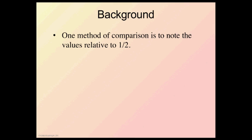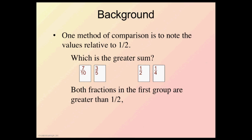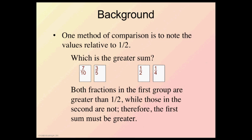A little bit of background information with this. One method of comparison between the two cards is to note the values relative to one-half. So which is the greater sum? The two cards on the left or the two cards on the right? Well, both fractions in the left group are greater than one-half. Seven-tenths is more than one-half, and three-fifths is more than one-half. And the fractions in the second group are one-half or less. Therefore, the group on the left is going to be a greater total. So I don't actually have to go through and figure out what the total is. I'm just comparing which has the greater amount. I don't have to know what the amount is. I just need to know which is greater. So comparison is going to tell me my answer. This is actually a skill that is very important in math to be able to estimate.